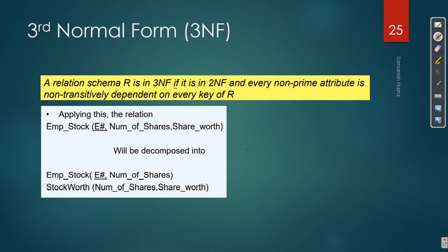If a relation is in 3NF, two conditions must hold. Number 1: it is in 2NF. And number 2: every non-prime attribute is non-transitively dependent on every key of R. Meaning, there should be no transitive dependency. If I am in 2NF but there is a transitive dependency, that cannot be called 3NF.